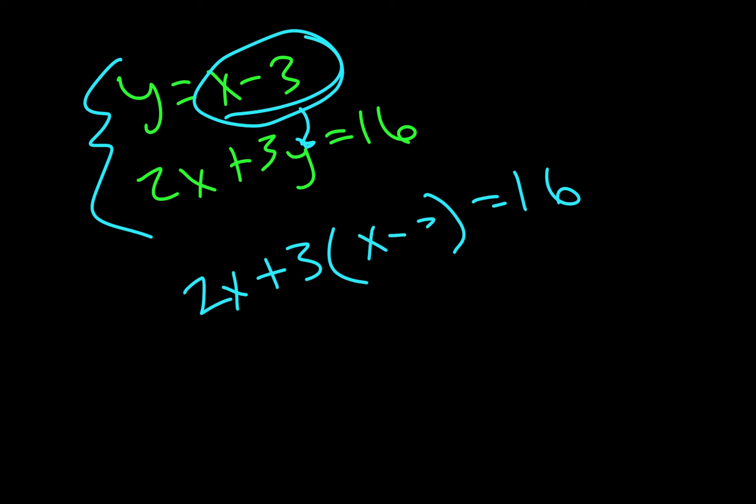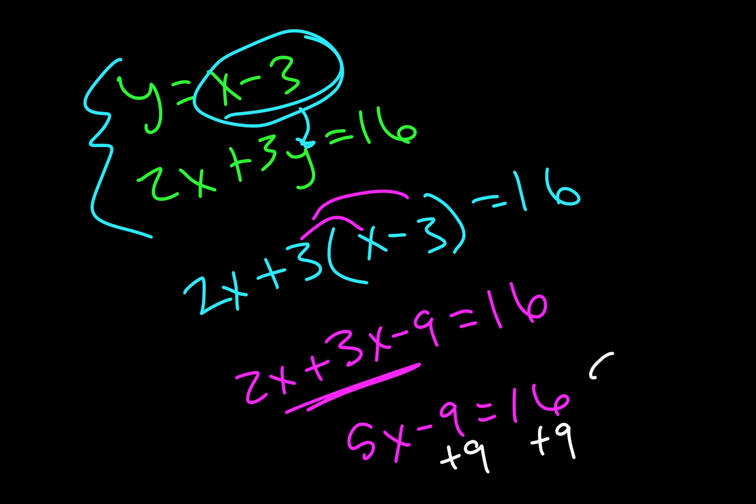So I still have 2x plus 3 times y equals 16. I like to do big parentheses just to make it clear. Since y is equal to x minus 3, I'm going to plug in x minus 3 right there. Now from here, we just need to solve for x as our big goal. So we get 3x minus 9. From that, we still have this 2x out here, and this still equals 16. Combine like terms. So we get 5x minus 9 equals 16. From here, we just add 9, and the final step of algebra for this part is divided by 5. So x equals 5.